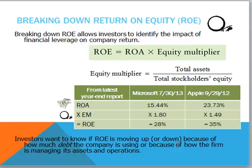Comparing the two: for Apple, it was the total asset turnover that drove ROE. For Microsoft, it was the profit margin and the use of leverage driving return on equity. Microsoft and Apple are not exactly in the same industry, but they're both technology companies and roughly in the same industry, so they are fairly comparable. And that is important when we're comparing ratios.